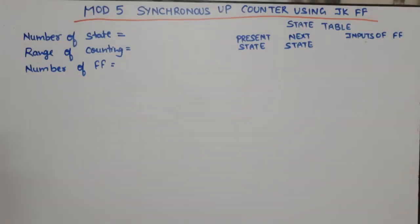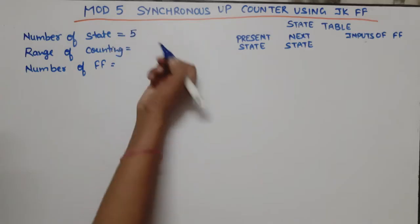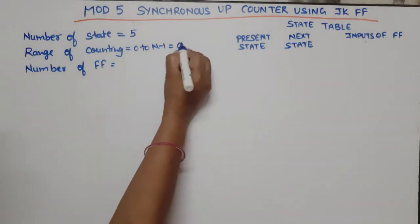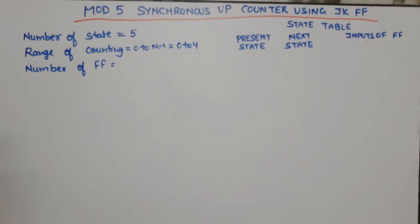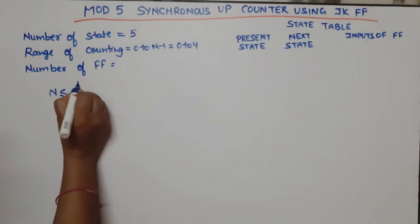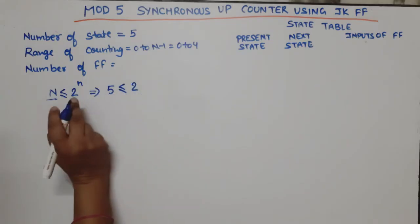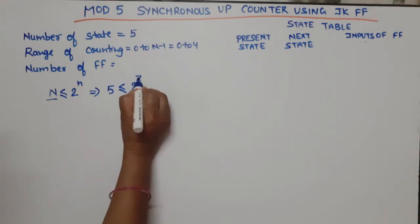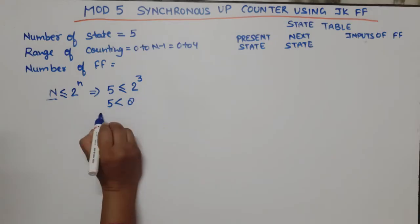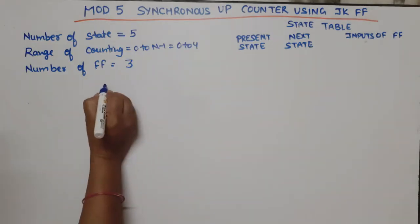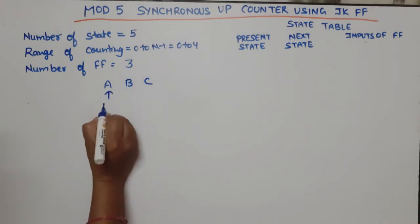In this video on digital electronics, we are going to design a mod-5 synchronous up counter using JK flip-flops. The number of states counted by this counter is equal to 5, with a counting range of 0 to N minus 1, which gives us 0 to 4. For the number of flip-flops required, N must be less than or equal to 2 raised to the power of n. Since 5 is less than 8, we need 3 flip-flops, named A, B, and C, where A is the MSB and C is the LSB.